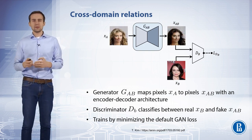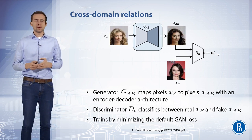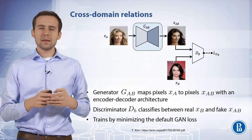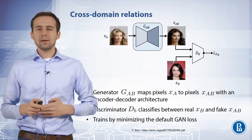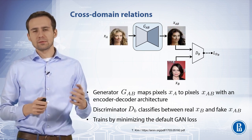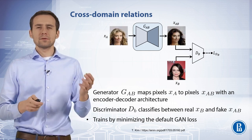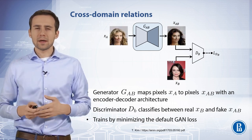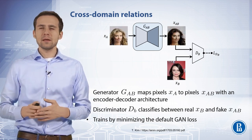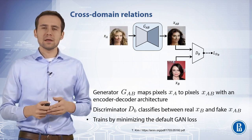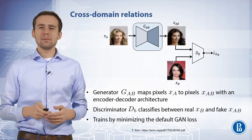The discriminator will try to distinguish between real and fake people with black hair. This whole model trains by minimizing the standard GAN loss. The generator tries to fool the discriminator, and the discriminator tries to output numbers close to 1 when XB is a real image in domain B, and numbers close to 0 when XAB is a fake image in domain B.